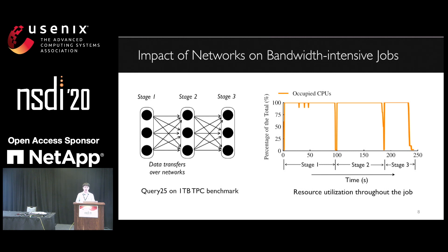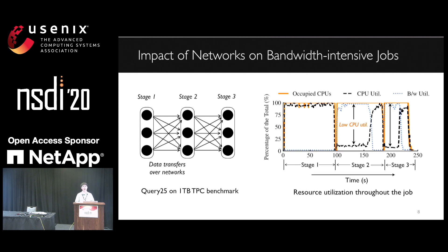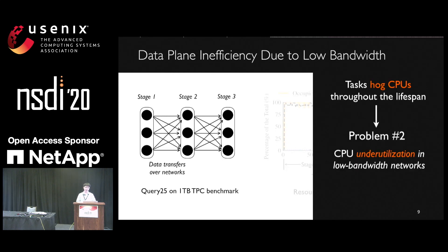As we can see, across all these stages, tasks were occupying their CPUs when they got started. However, if we check the actual CPU and network utilization, we can notice for stage 2 and stage 3, when the task is busy with data preparation over the network, their network is fully utilized. However, the actual CPU utilization is pretty low. So when it comes to the low bandwidth, the CPU is underutilized during task execution. This is because even in case of low bandwidth networks, these tasks were still hogging their CPUs for data preparation and computation throughout the lifespan. So this resource provisioning in the data plane is tightly coupled, which can lead to CPU underutilizations.